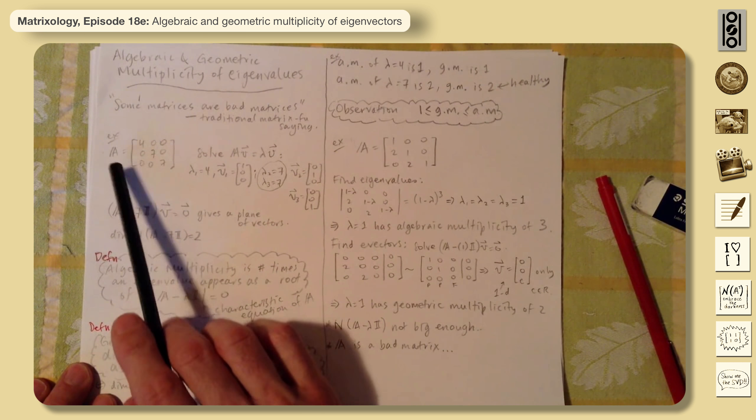the determinant of A minus lambda I equal to zero. So set zero equal to this. And here's A minus lambda. So we're subtracting lambda from the main diagonal. It's a triangular matrix. So there's nothing. We don't have to worry about the twos here. It's just a product of the diagonal entries. One minus lambda cubed. Set that equal to zero. We have three roots that are the same. Lambda 1, lambda 2, lambda 3, they're all one.